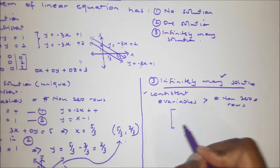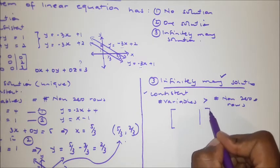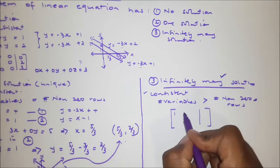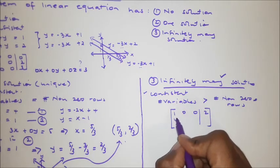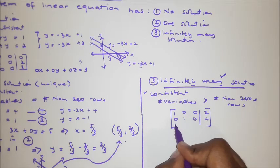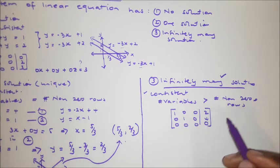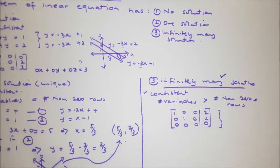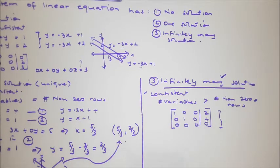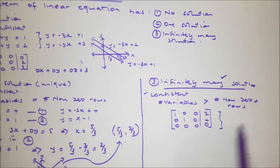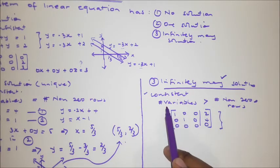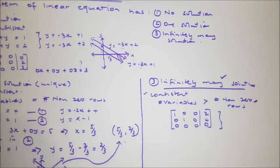Let's say in a matrix we reach a point like this: row 1 is [1, 0, 0 | 2], row 2 is [0, 1, 0 | 4], and row 3 is [0, 0, 0 | 0]. Here the number of variables is three — one, two, three — but the number of non-zero rows is two. So the number of variables is greater than the number of non-zero rows, which means we have infinitely many solutions.